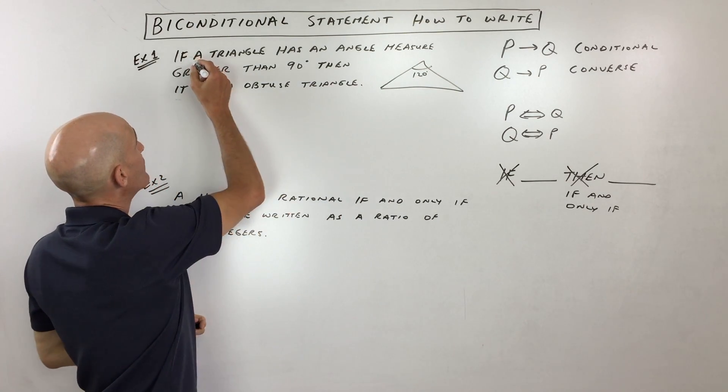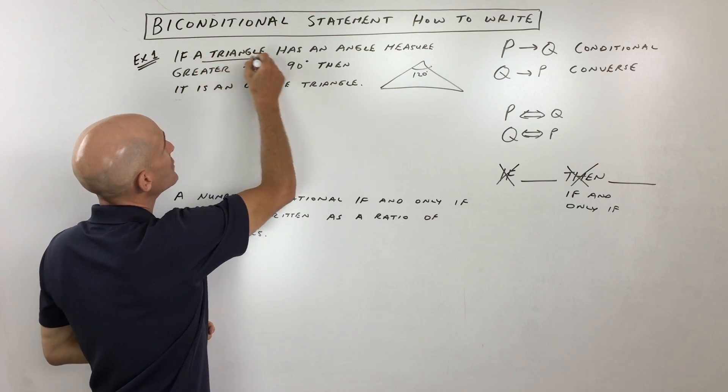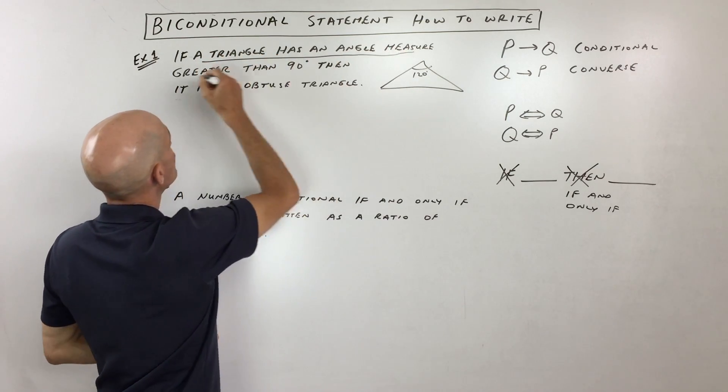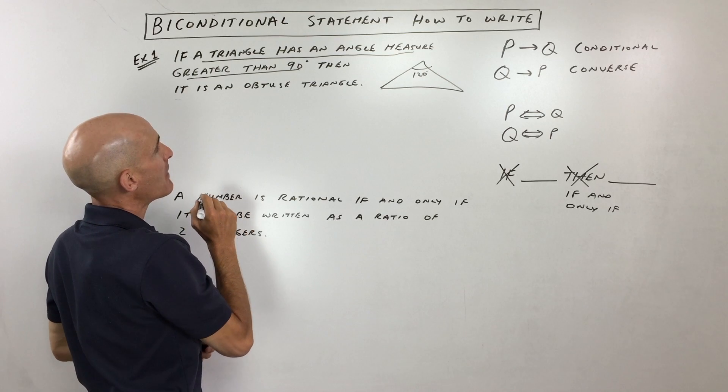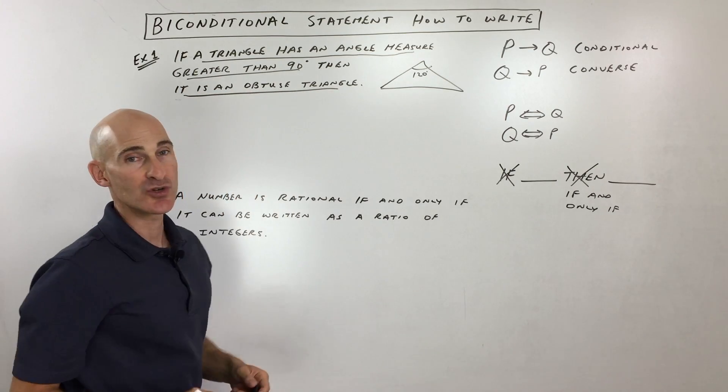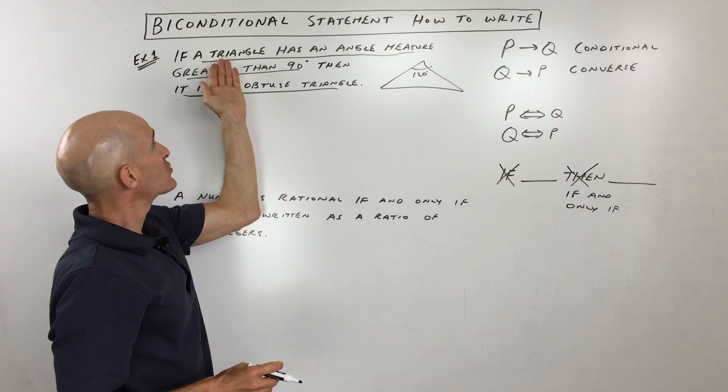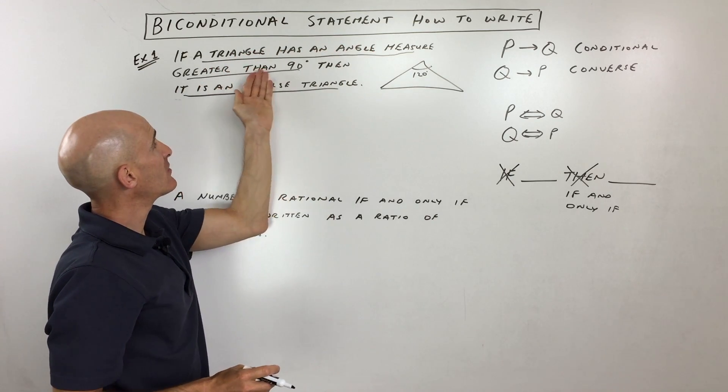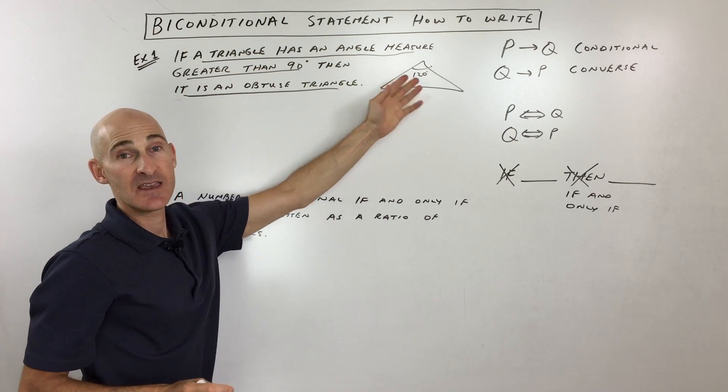Now here's the thing. Whatever comes after the if, meaning a triangle has an angle measure greater than 90, that's our hypothesis. Whatever comes after the then, that's our conclusion. So, is this true if a triangle has an angle measure greater than 90, then it's an obtuse triangle? Yes, that's true.